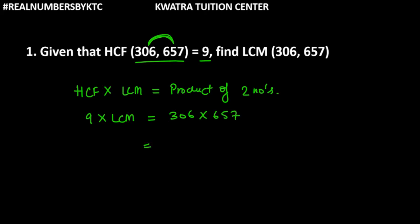So now you have to multiply 306 and 657. So the resultant will be 201042. Now we have 9 into LCM. Now 9 will divide on your right hand side.